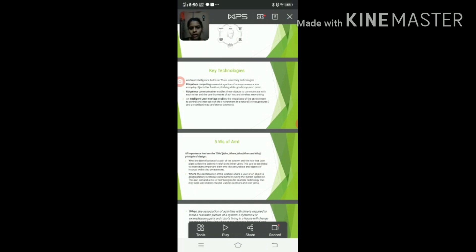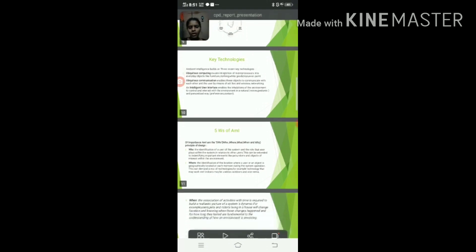Ambient Communication enables these objects to communicate with each other and the user by means of ad hoc and wireless networking. Intelligent User Interface enables the inhabitant of the environment to control and interact with the environment in a natural and personalized way.